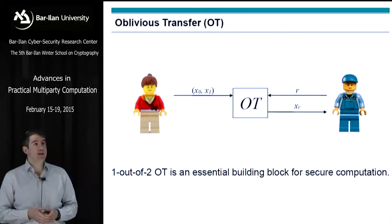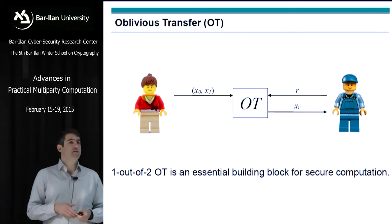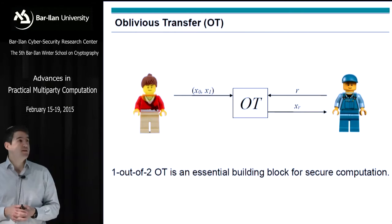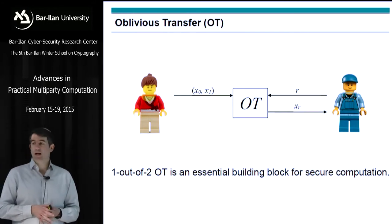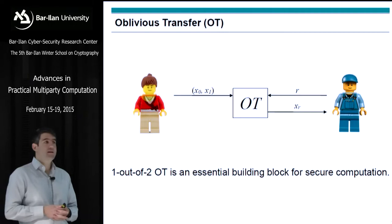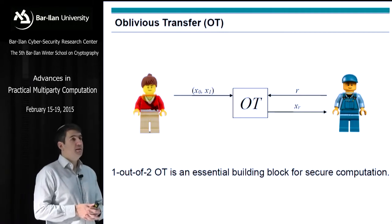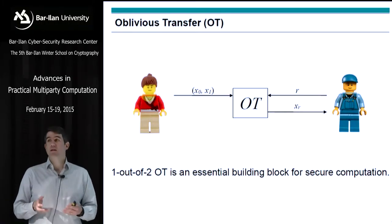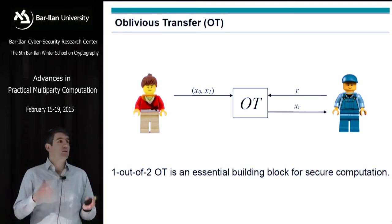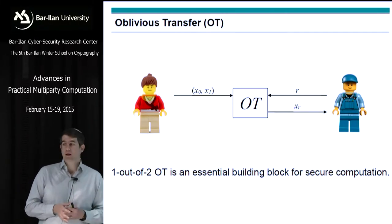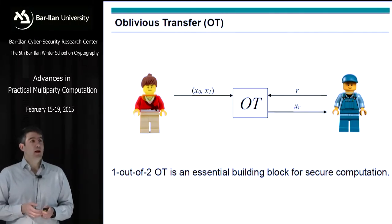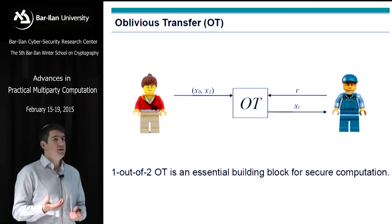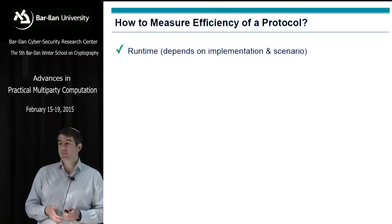Oblivious transfer: we have two inputs to the first party — the sender Alice — X0 and X1. The receiving party Bob has a bit B, which we denote by R, and the output is X sub R, so Bob receives either X0 or X1 depending on his input. This is an essential building block, and making it very efficient is of great importance. Benny talked yesterday about OT extensions, and I'll expand on that again today.